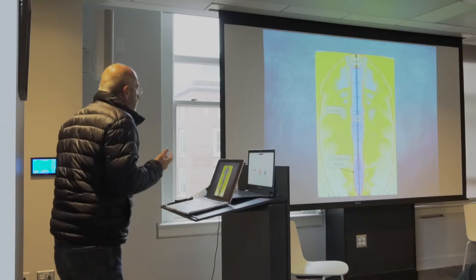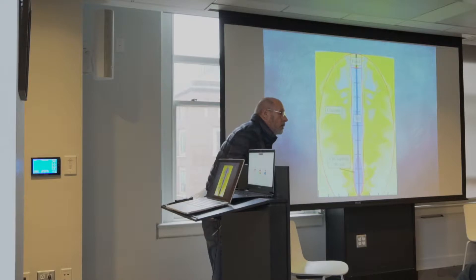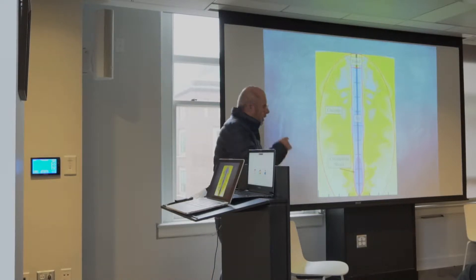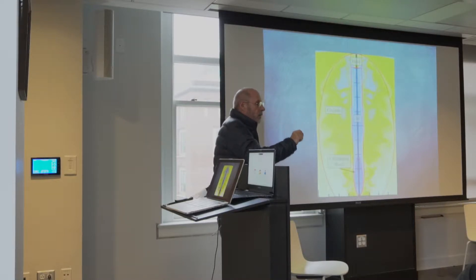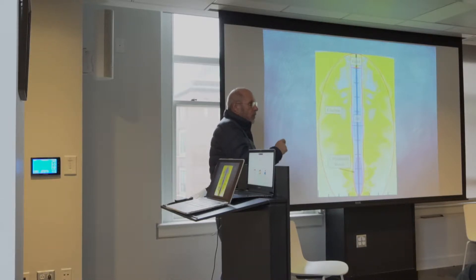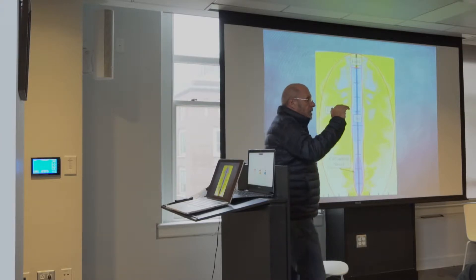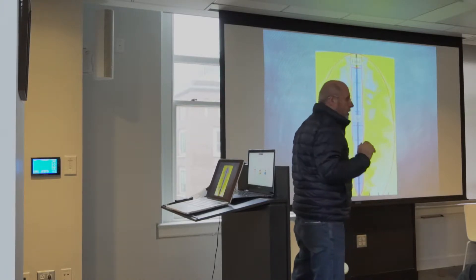What kind of supernovae are these? Most of them are type Ib, there is one type Ic, and there is also a type IIb — so type II as well. So they are almost as regular as possible, but slightly stripped-envelope. This is also consistent with this picture.